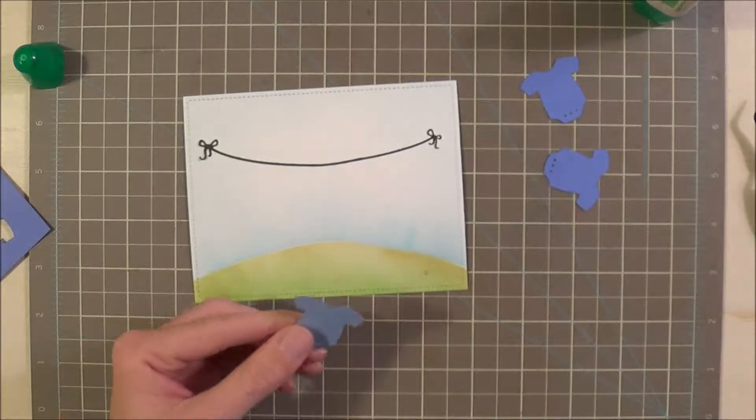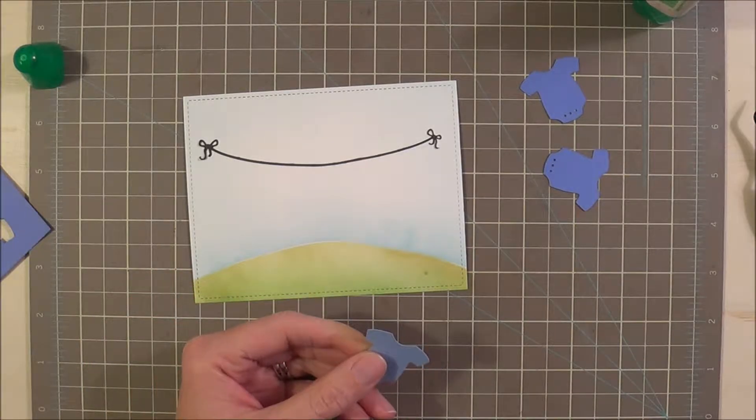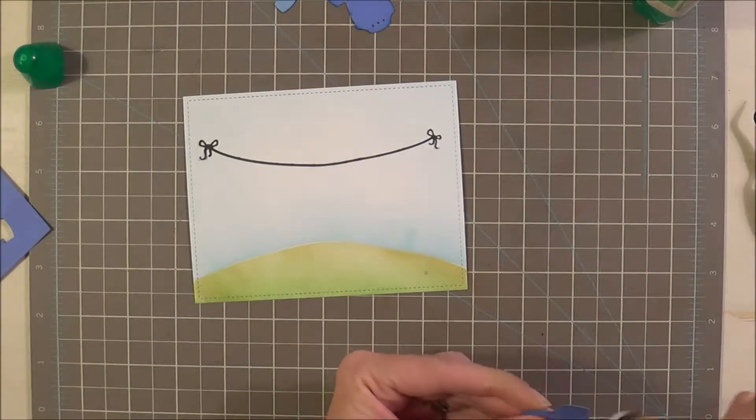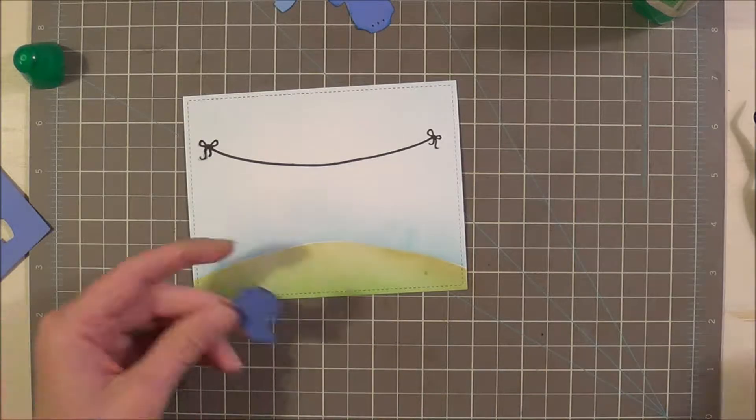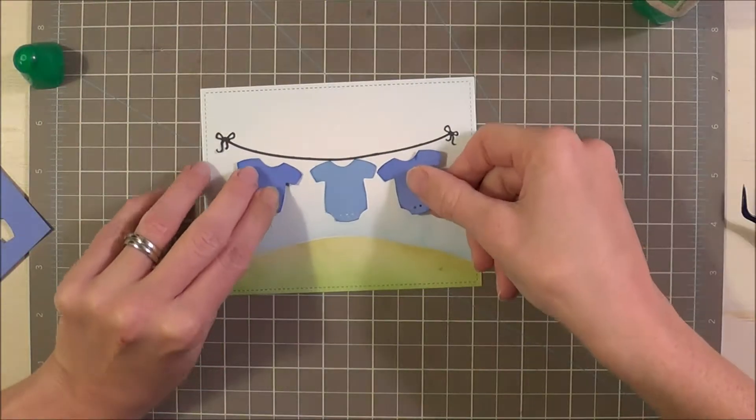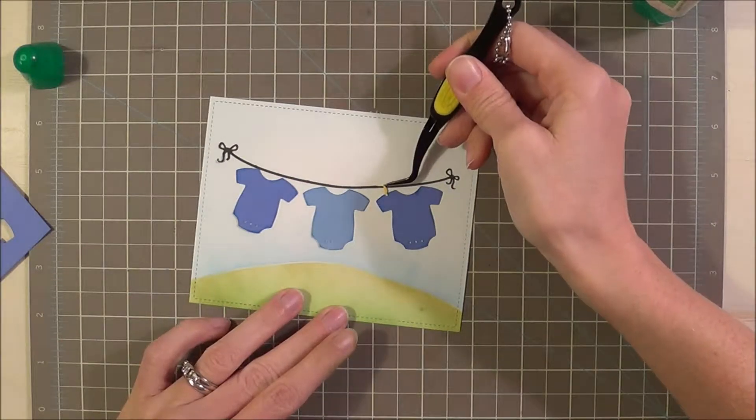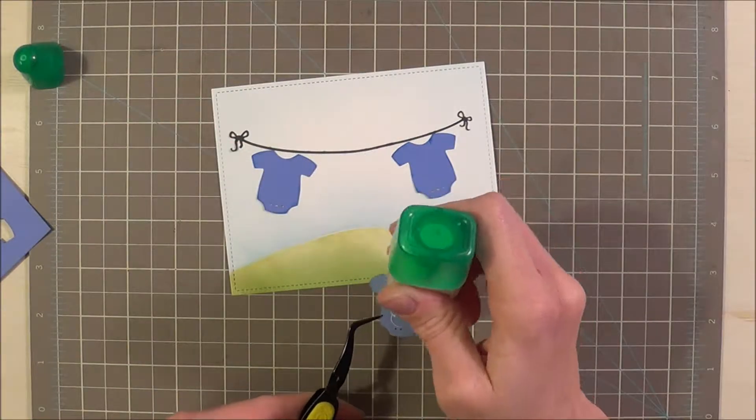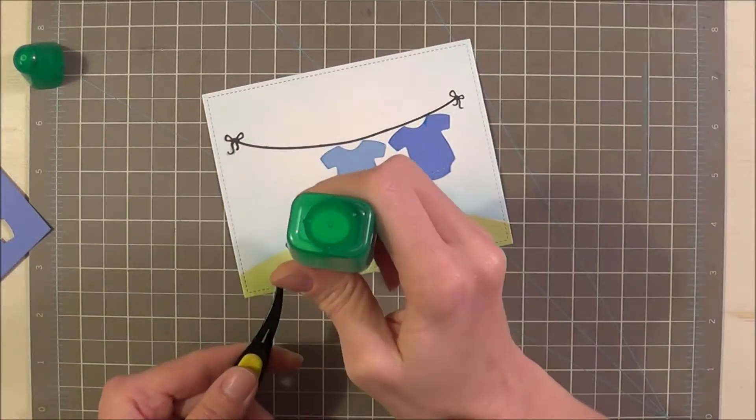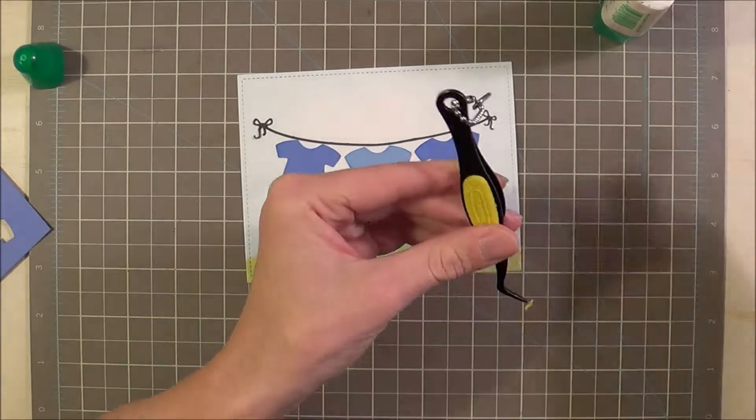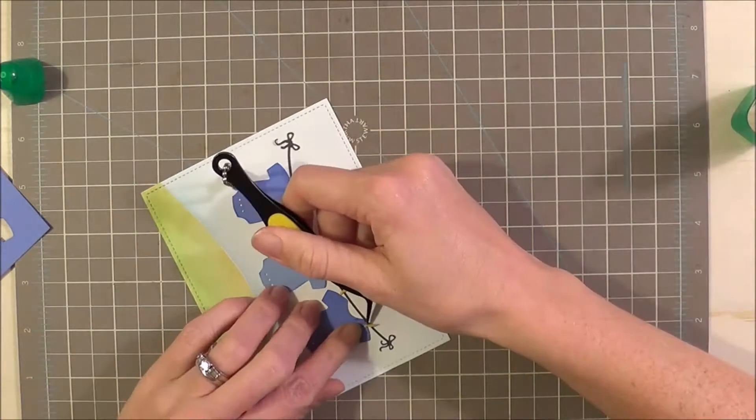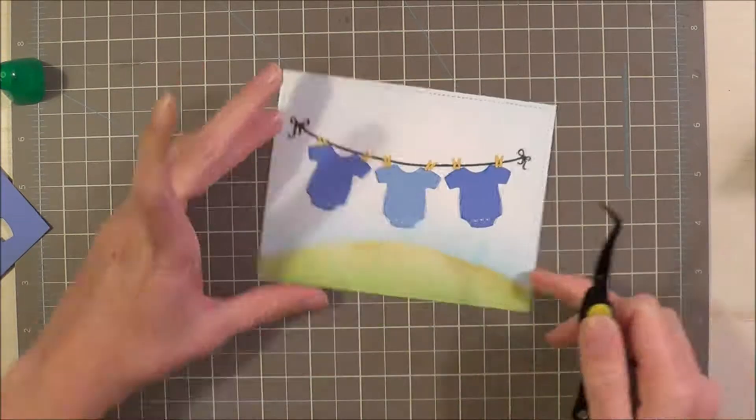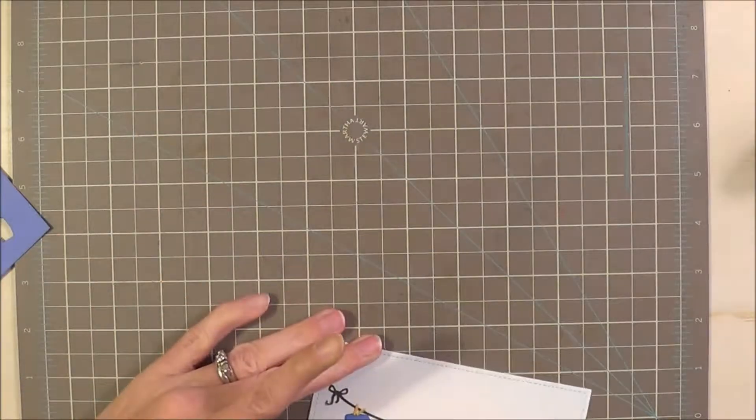I'm going to be using some Mermaid Lagoon and I'm just going to distress the edges of the onesies. So far, the card is looking super sweet.